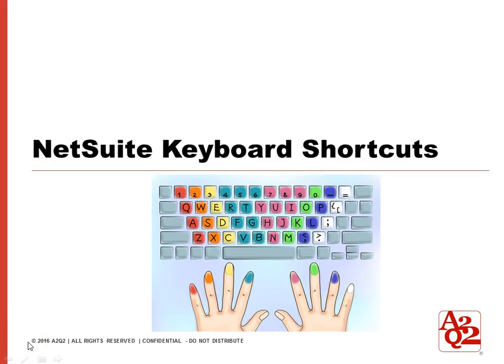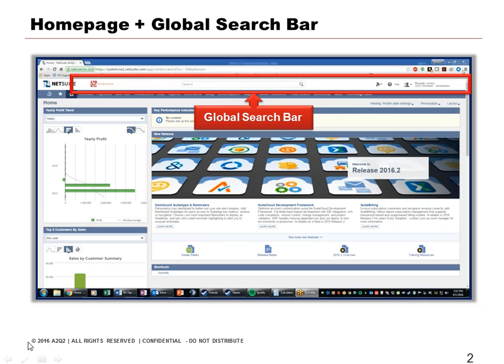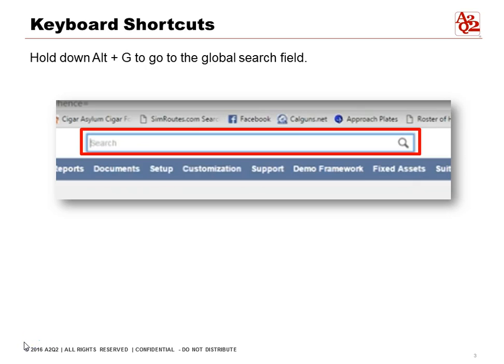Let's talk about keyboard shortcuts in NetSuite and how we can be even more efficient. Here's our home page and it shows us the global search bar. If we're doing other things and want to do a search using just our keyboard, hold down ALT plus G — it will automatically take us to the global search field without having to exit what we're doing and go to search.